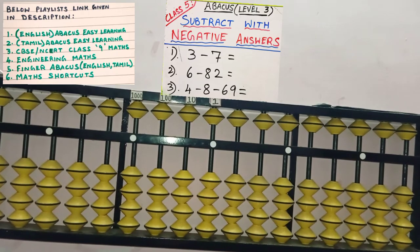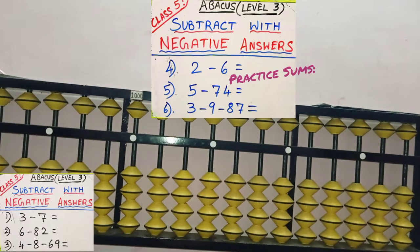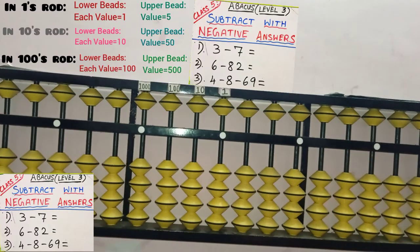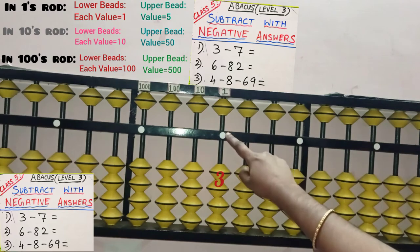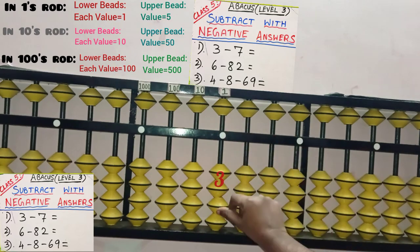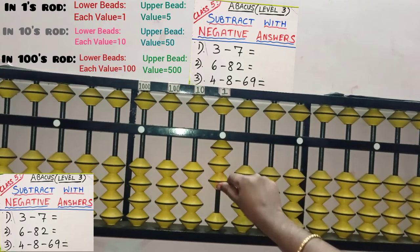I will explain 3 problems here, and these 3 problems are for your practice. You can try this using Abacus. The first sum is 3 minus 7. 3 is a single digit number and its place value is 1's, so add 3 beads in the 1's rod. This is 1's rod, so add 3 here.